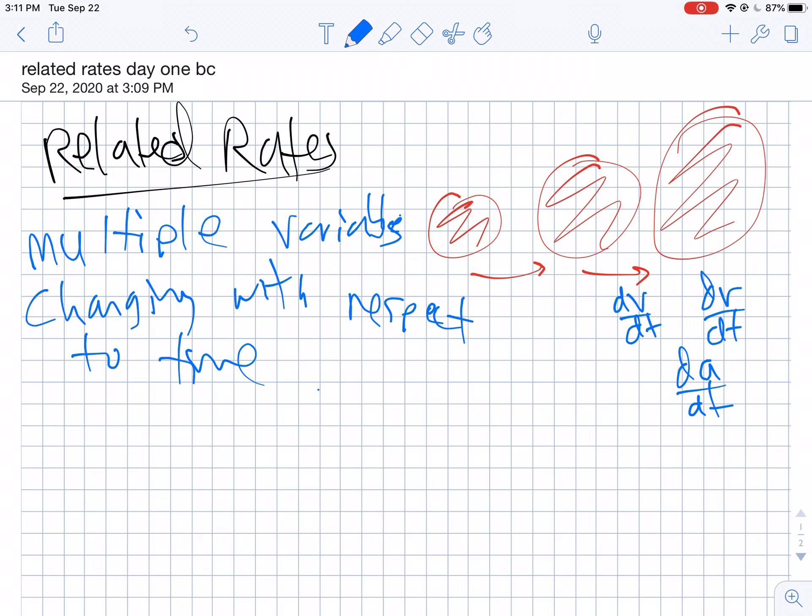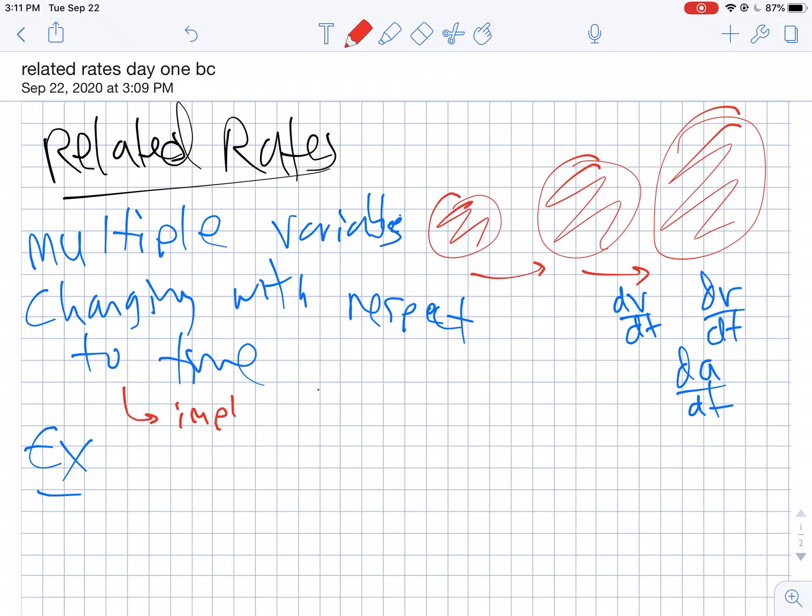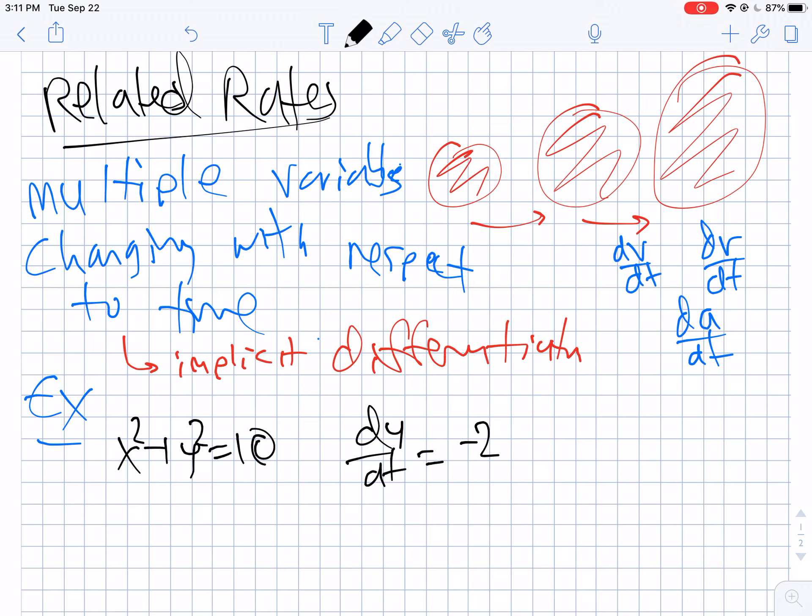First off, let's start with some examples without a context, just general math problems. What we're going to be doing as our key technique throughout this is implicit differentiation, which you may remember from not too long ago. Let's give a few examples. Suppose we have x² + y² = 10, and I tell you that dy/dt equals -2. I'm going to ask you to find dx/dt at the point (-3, 1).